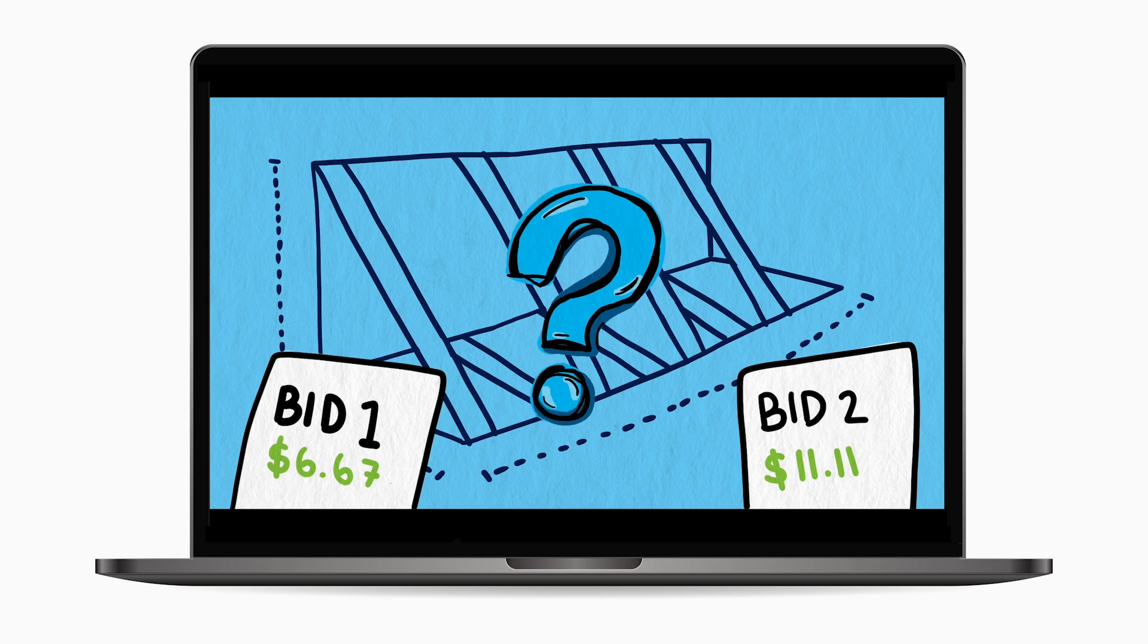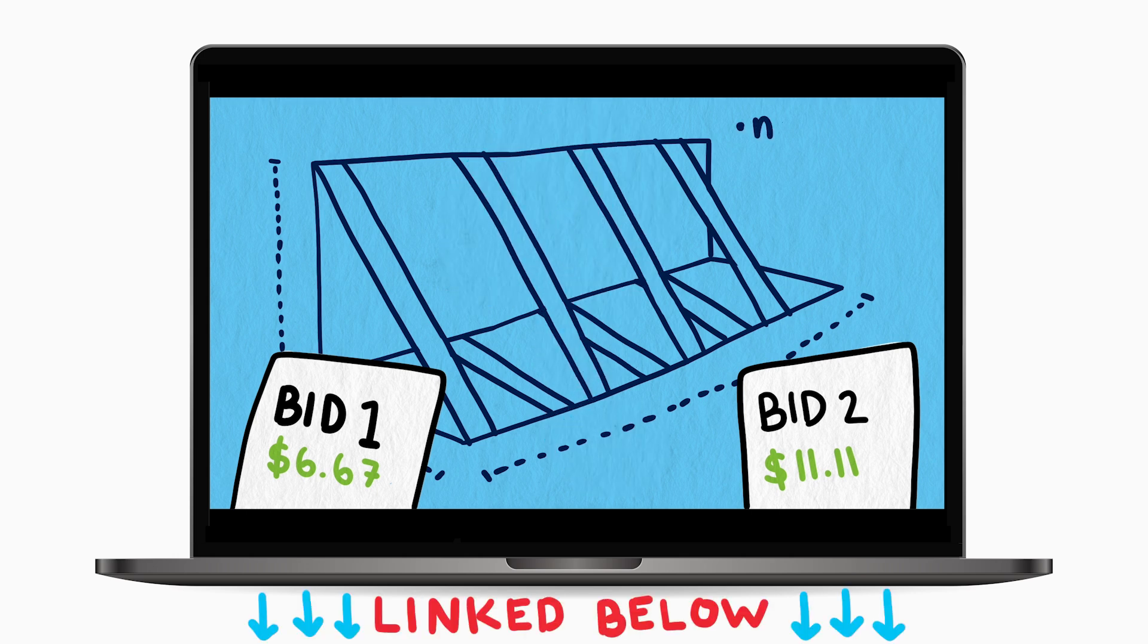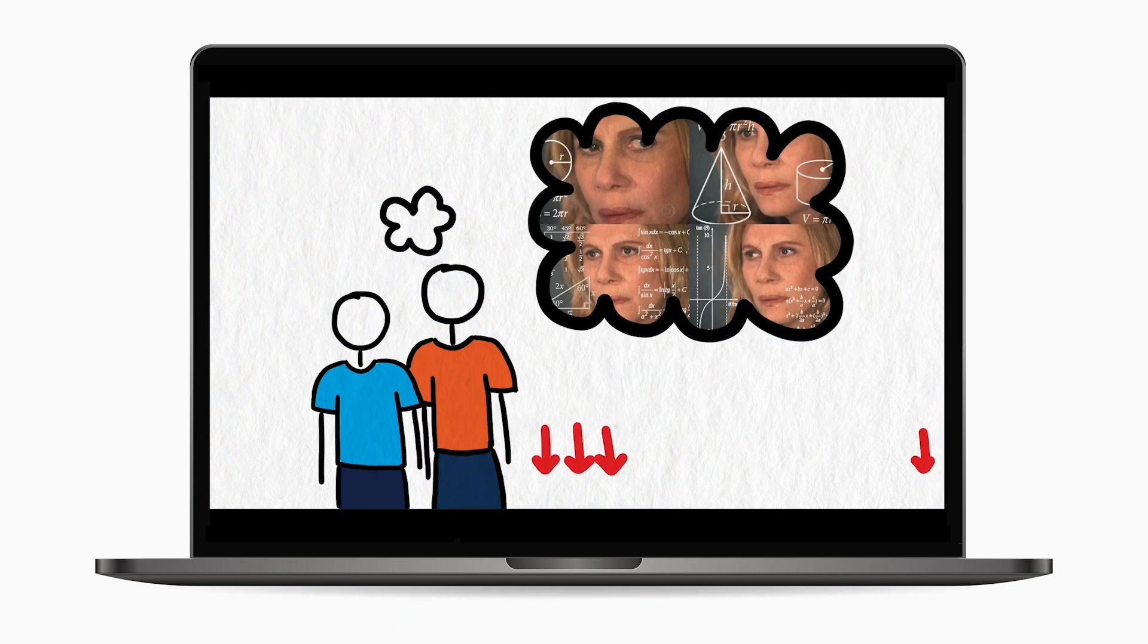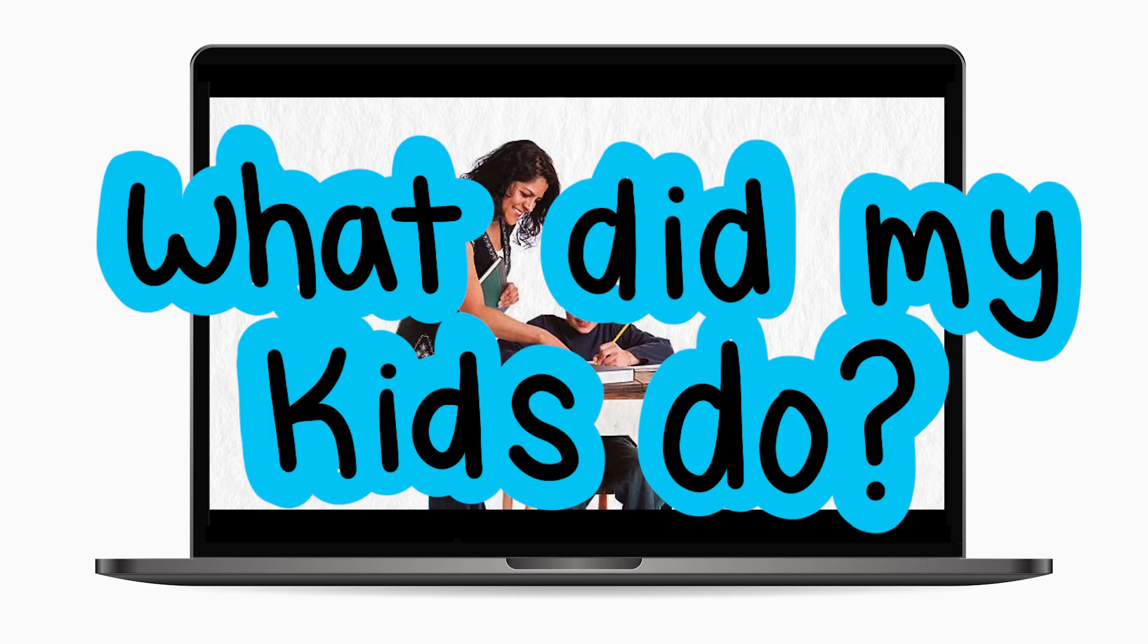If you haven't watched the previous video, you can find the link in the description, and you can see if you can solve the puzzle yourself before watching this video, where we reveal what my kids were thinking. There are even a couple of hints in the description of the previous video to help you out. So what did my kids do?